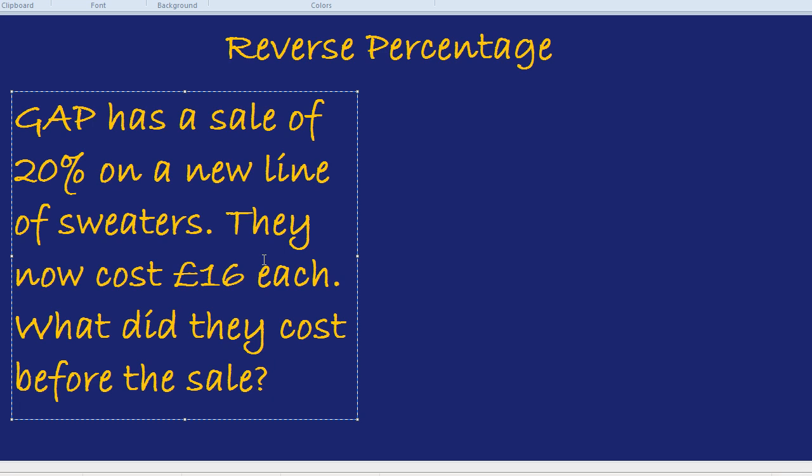They took away 20% from that 100%. To answer the question, we're annoyed that they took away 20% — if they hadn't, we'd have the original price already. If you take away 20% from that shining 100%, what percentage are you left with? Yes, you're left with 80%.